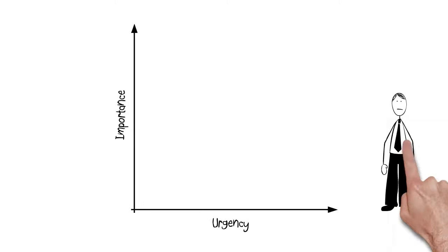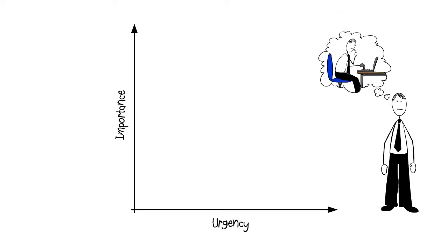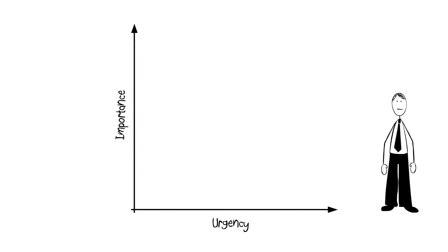First, Leon needs to place all his activities along here, depending on how important or urgent it is. For example, Leon likes to spend a few minutes each morning web browsing to ease into his day. It's clearly not a task that needs doing immediately and it's not a particularly important one so we'll place it around here.